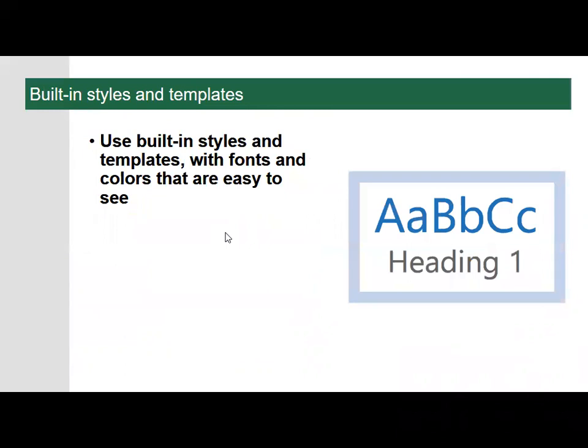You can enhance the accessibility of your Office content by using built-in styles and templates with fonts and colors that are easy to see. Microsoft offers a collection of templates that use accessibility features like better color contrast, large font size, and headings in logical format. Specifically in the accessible PowerPoint templates, Microsoft has improved the reading order for slide content and given each slide a unique title — for example, instead of every slide reading 'click to add title,' accessible templates say 'Add a slide title 1,' 'Add a slide title 2,' and so on.